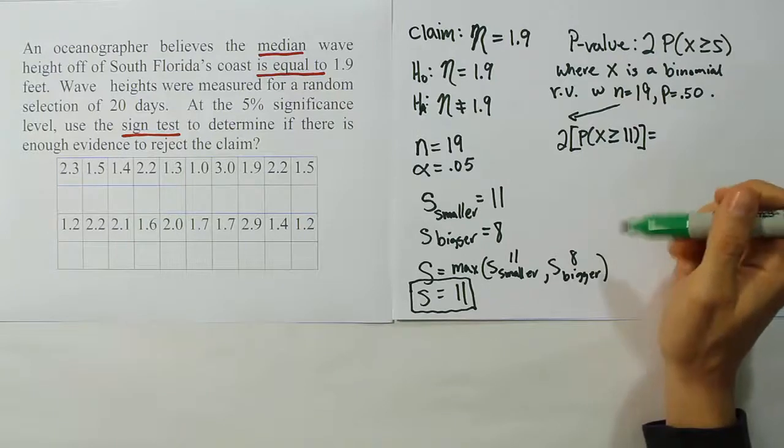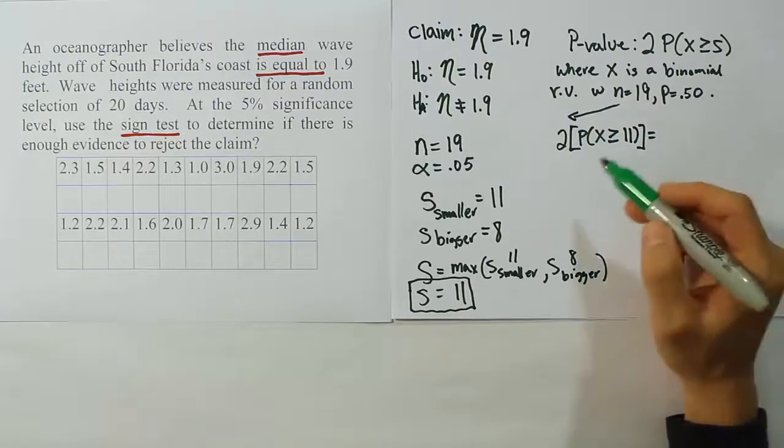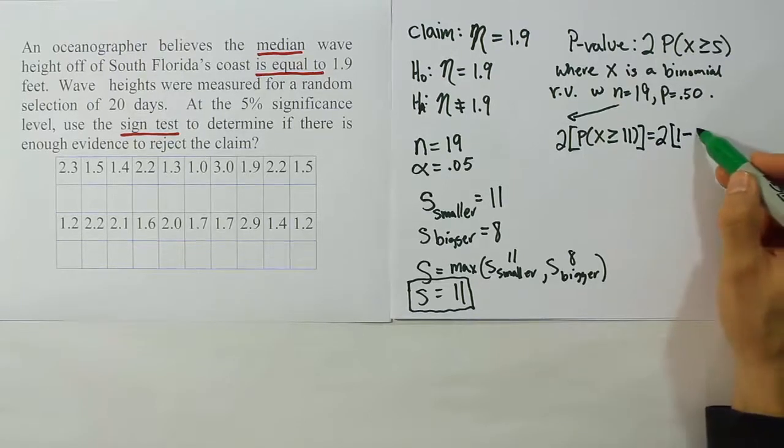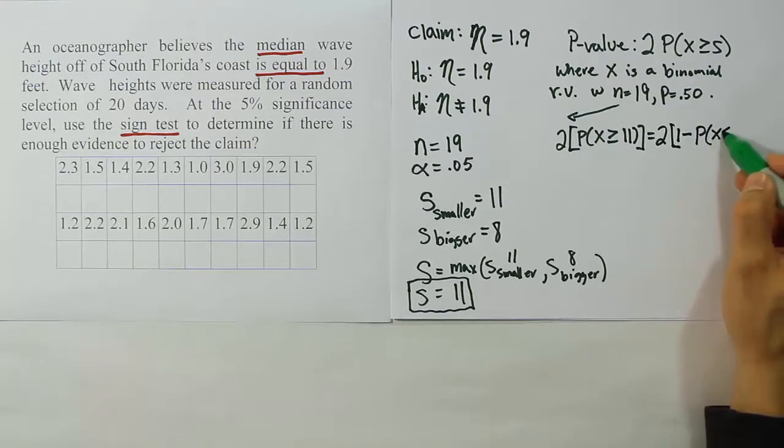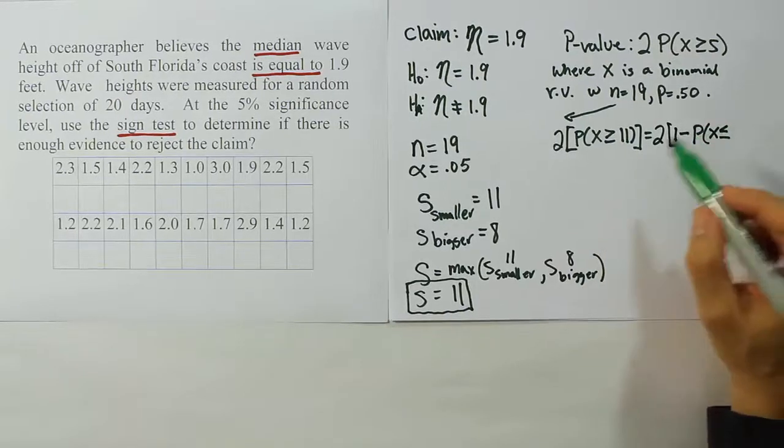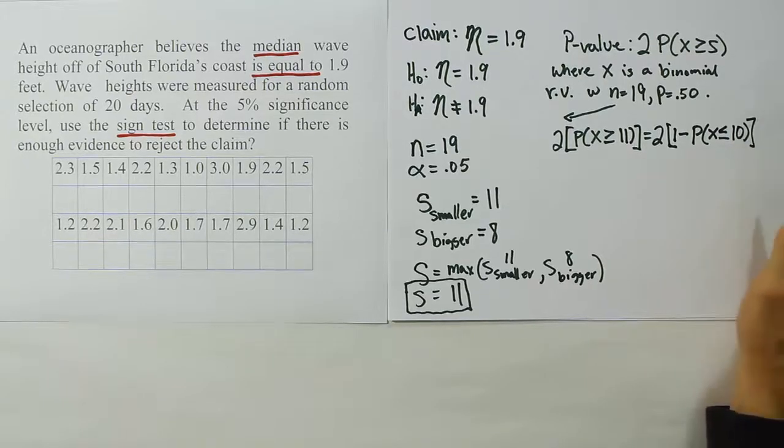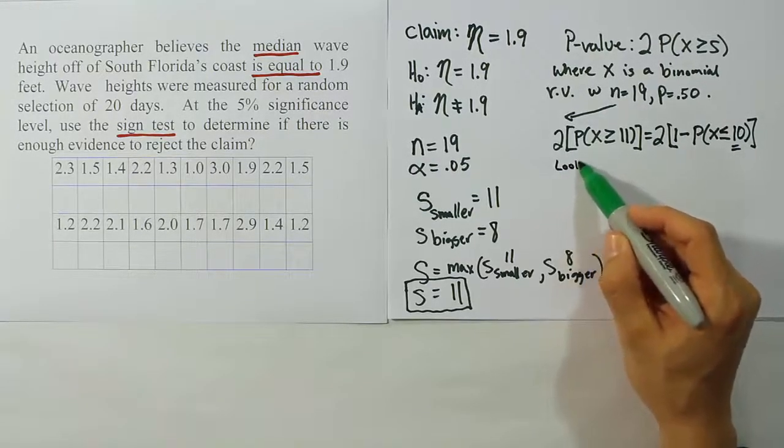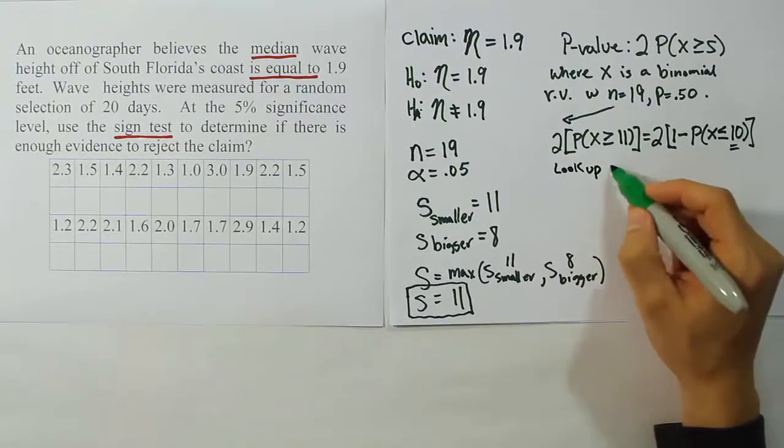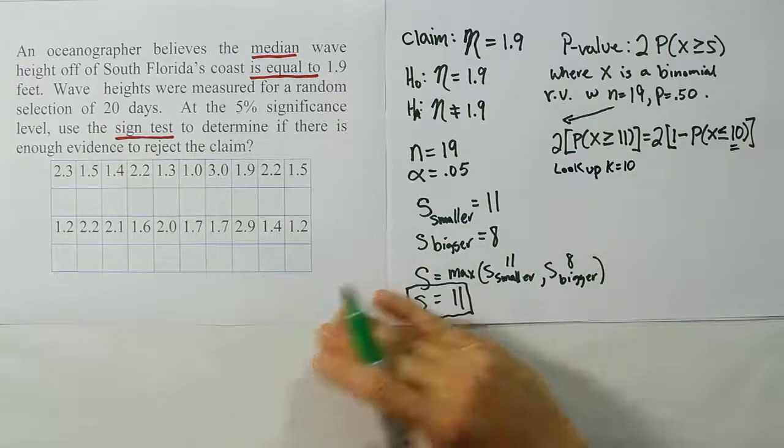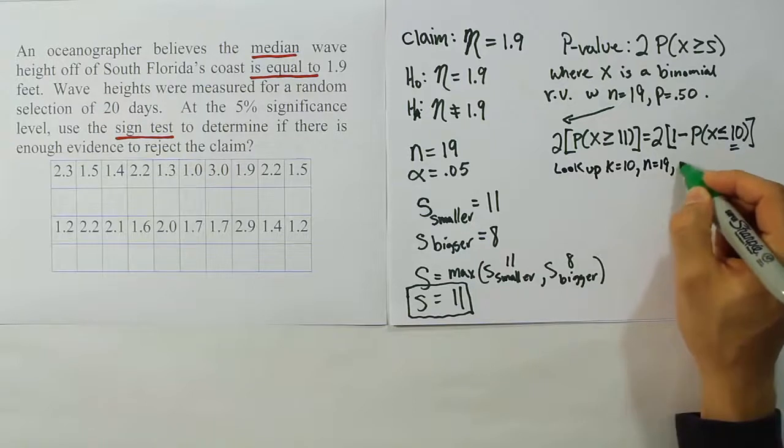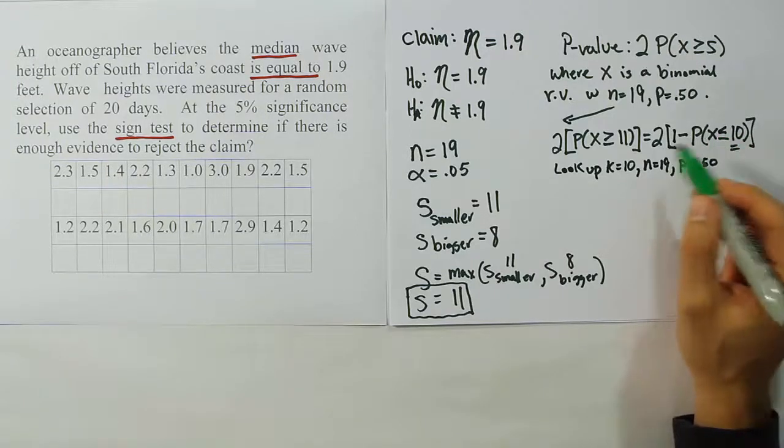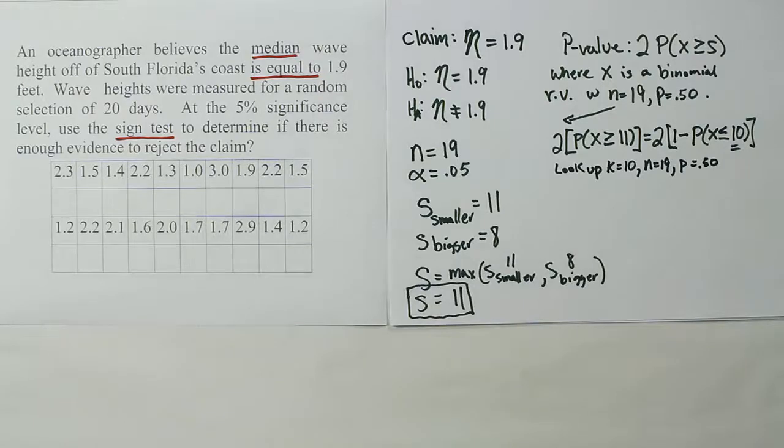If we found out that that was unusual, we would tend to think that the median isn't really 1.9. If we find out that this is a very typical thing to have when the median is 1.9, then we won't worry about it. We'll say that the H0 is fine. We should not reject it based on this data. That's our idea behind the p-value. We're going to go to the table. We're going to look up the probability that X is greater than 11, assuming that X is a binomial random variable with n equals 19 and p equals 0.5.